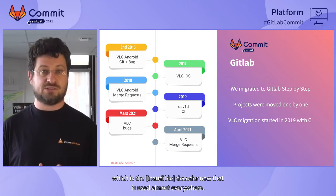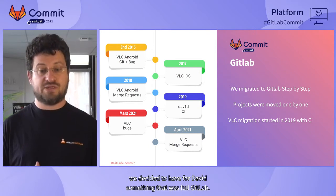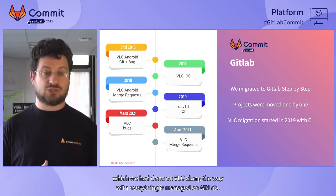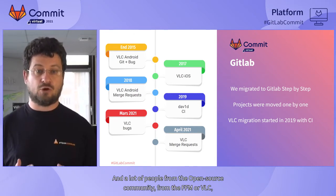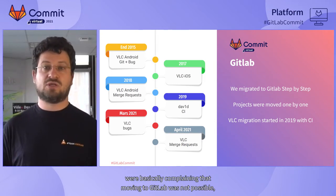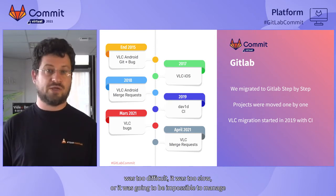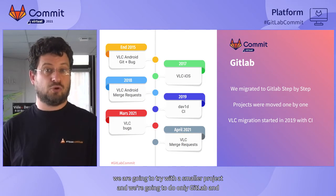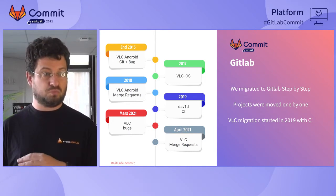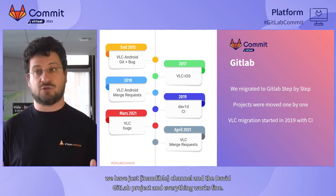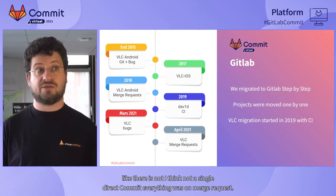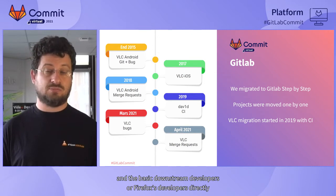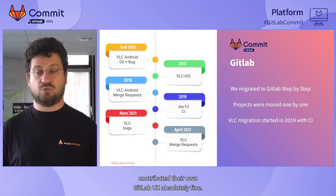When we started a new project — Dav1d, the AV1 decoder now used almost everywhere — we decided to have it be full GitLab from the start. There is not even a mailing list; everything is managed on GitLab. A lot of people from the open source community, from FFmpeg or VLC, were complaining that moving to GitLab was not possible — too difficult, too slow, impossible to manage large numbers of merge requests. With Dav1d, we said we'd try with a smaller project and do only GitLab. We have just an IRC channel and the Dav1d GitLab project, and everything works fine. Chrome and Firefox developers directly contributed there, and it works absolutely fine.